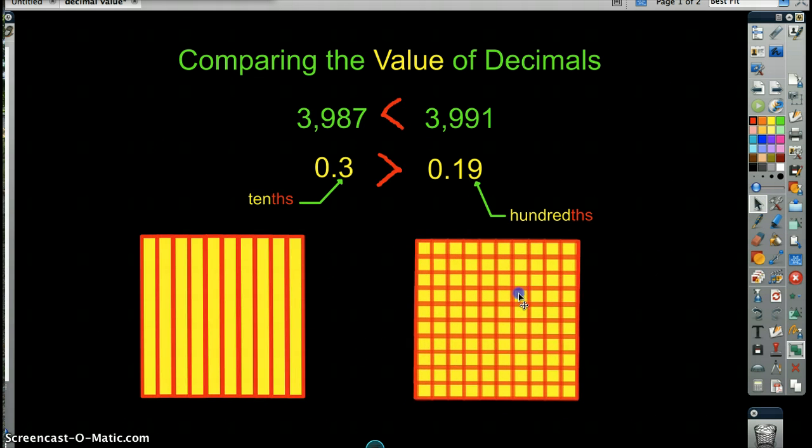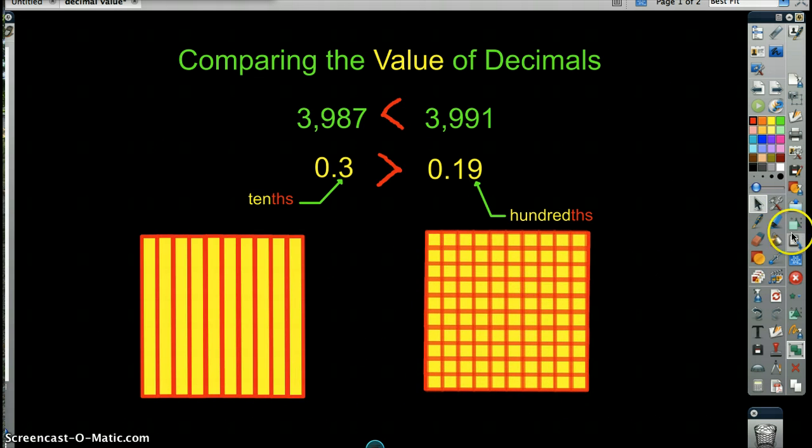Well, what would nineteen-hundredths look like? Well, in this particular case, what we would have to do is, we can't just fill in strips. This is broken into a hundred parts. And so, let's fill in nineteen of them, right? So, it would be one and, well, let me get a little bigger ball here. We'd say, well, there's one and two and three and four and five and six and seven and eight and nine and ten and eleven and twelve and thirteen and fourteen and fifteen, sixteen, seventeen, eighteen, nineteen. Wasn't that exciting? Okay. That's nineteen-hundredths.